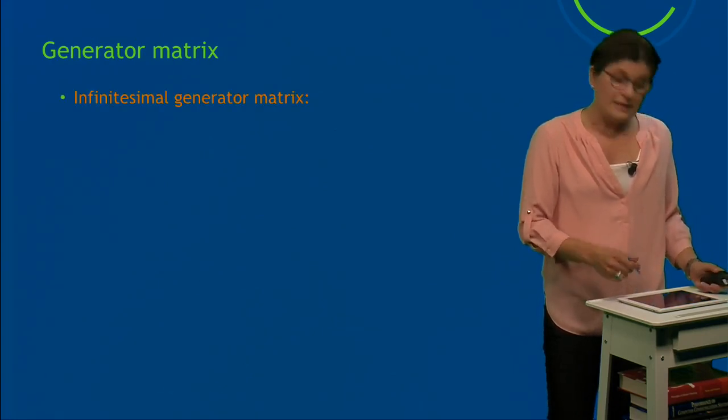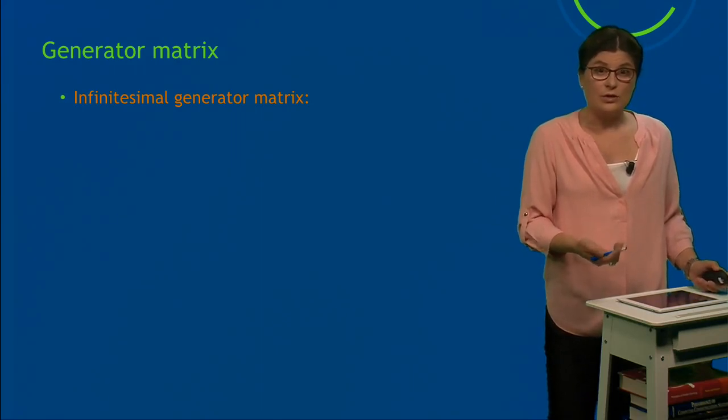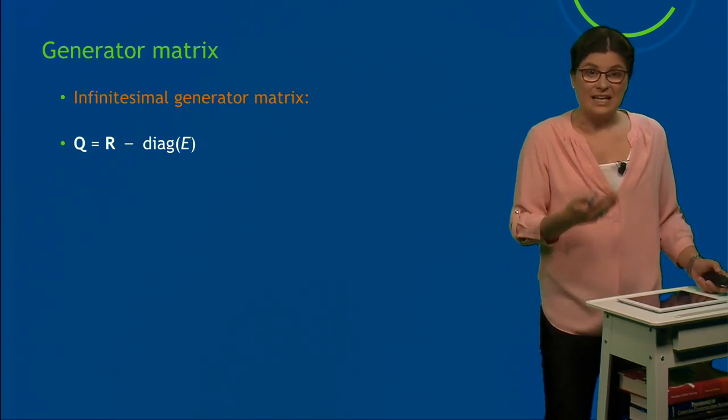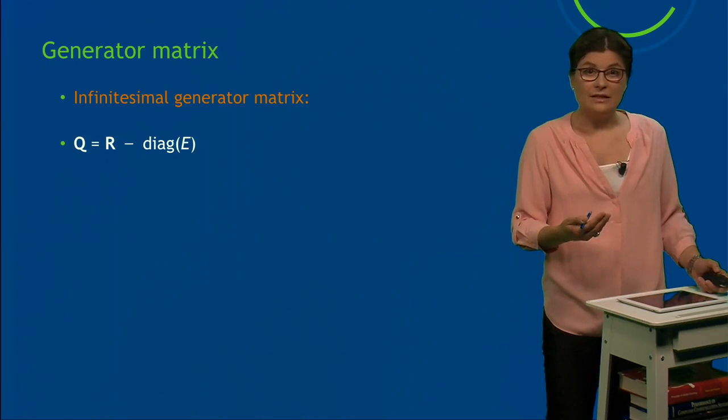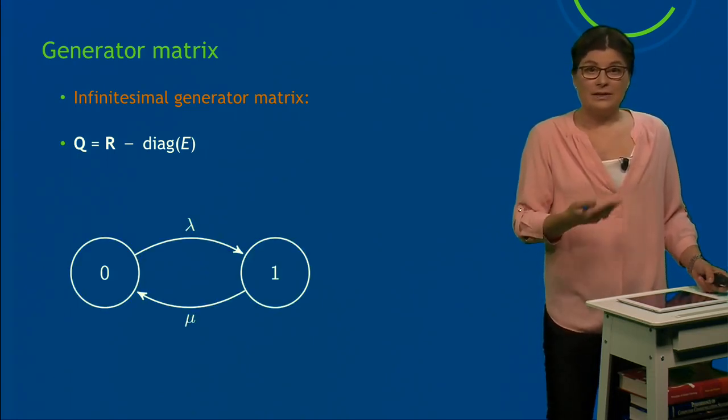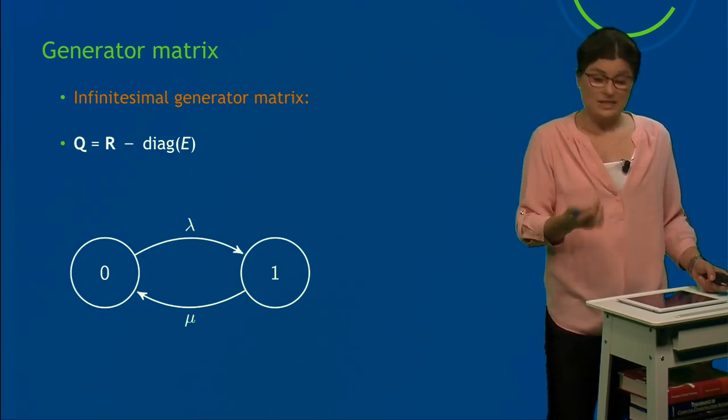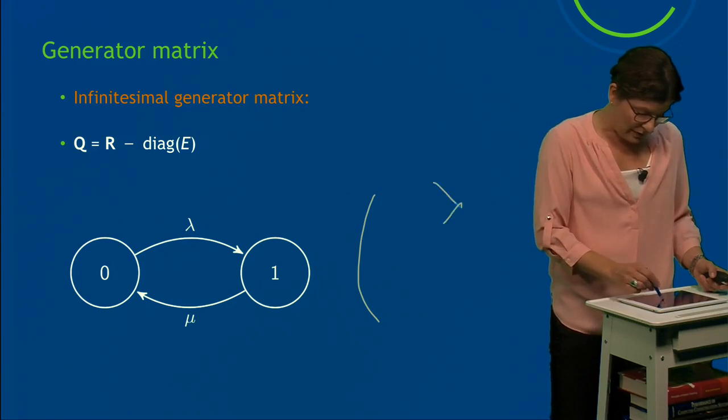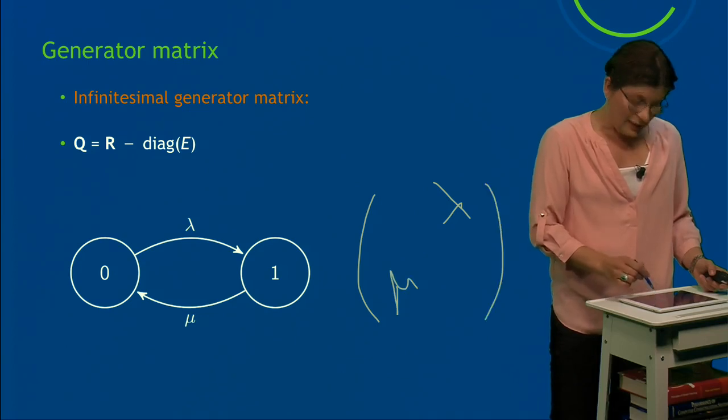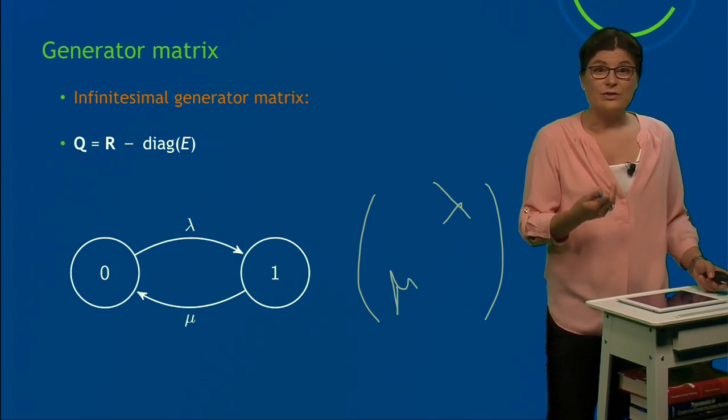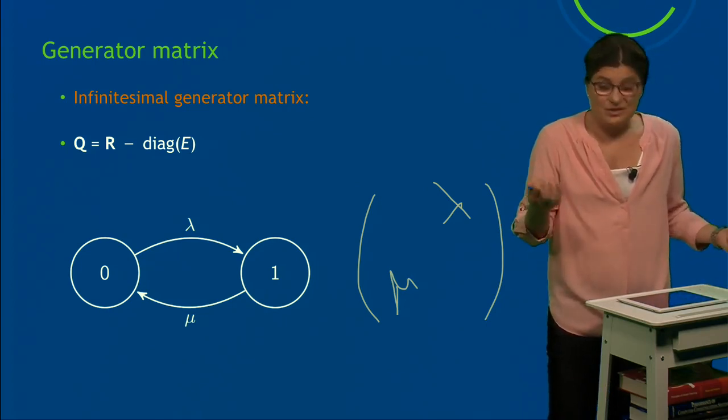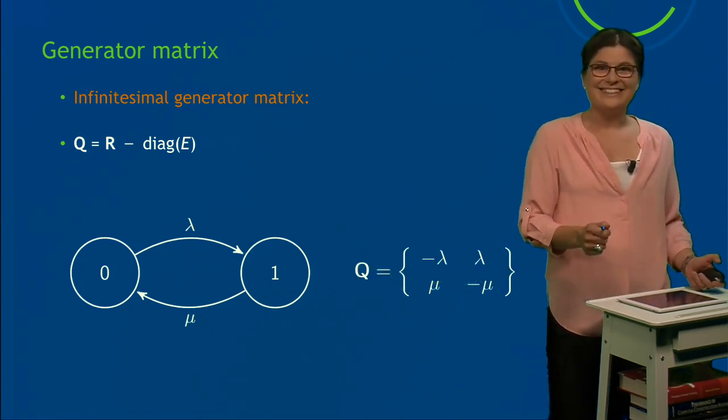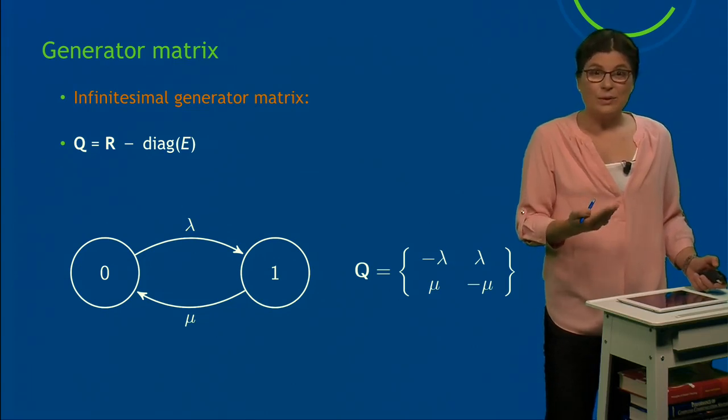Now this discusses the generator matrix. It is also called the infinitesimal generator matrix—you don't need to remember that. Q is capital R minus, on the diagonal, the exit rates. Let me show you an example. This is a very simple CTMC, two states. Let's see whether I can write down the Q matrix for this. So from 0 to 1, I go with λ, and from 1 to 0, I go with μ. That leaves two entries, and this is where I have to subtract the exit rate on the diagonal. In this case, it's very easy. Even I can do that on the fly: -λ and -μ. Let's see whether this is correct. Yeah, I did it. So this is how we build the generator matrix.